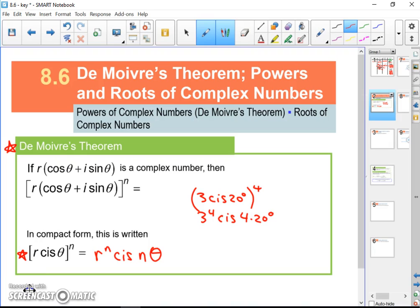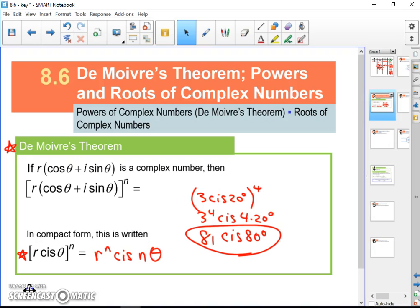3 to the 4th is 81 and 4 times 20 is 80. So that's a typical De Moivre's problem. As long as we're in polar form, the difficulty is going to be if we're not in polar form.